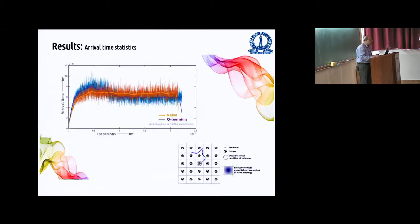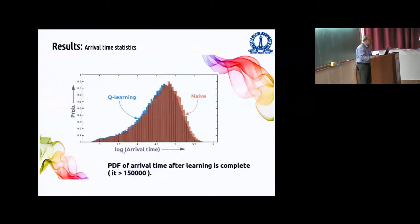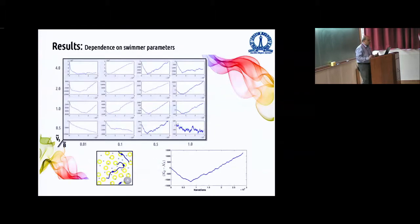And we can do arrival time statistics. I cannot go through all details. All these depend on parameters. The two parameters here are the non-dimensionalized velocity of the swimmer, that's changing here, and the non-dimensionalized time scale, non-dimensionalized by some eddy turnover time. And you can see that what you should be looking for is a minimum here and then an upturn. So the upturn means that your smart strategy is helping the swimmer.